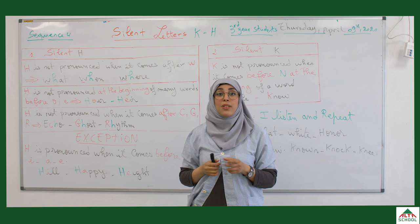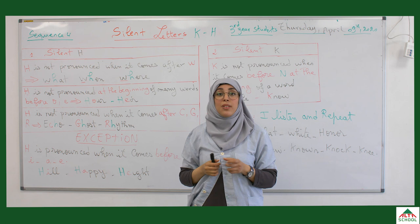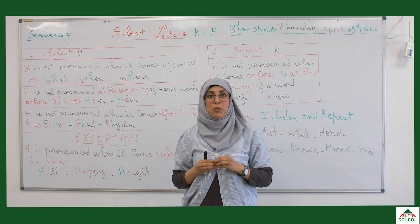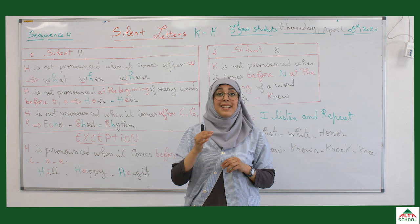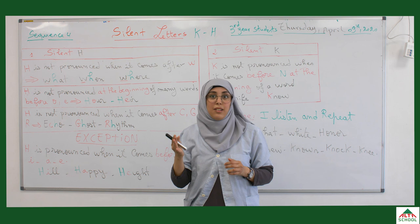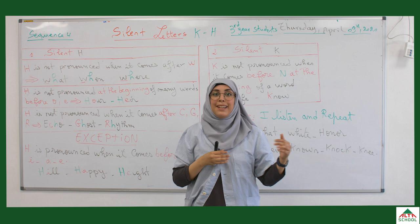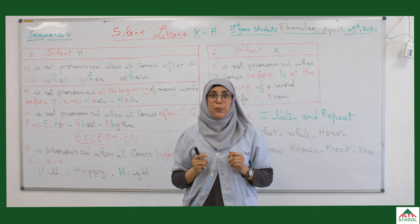If you remember, we did a similar lesson which is called silent letters. During the second semester we did silent letters T and W. For example, the T in 'listen' is silent — we don't say 'listen'. And for 'wrong', the W at the beginning is silent because we have an R after W.